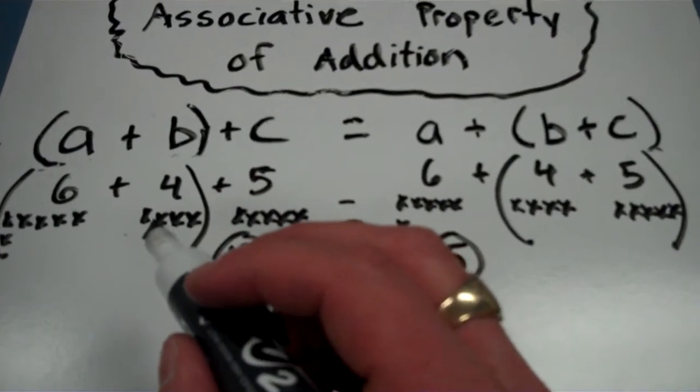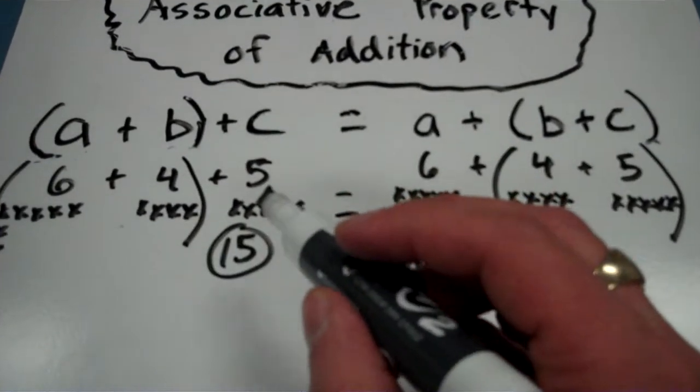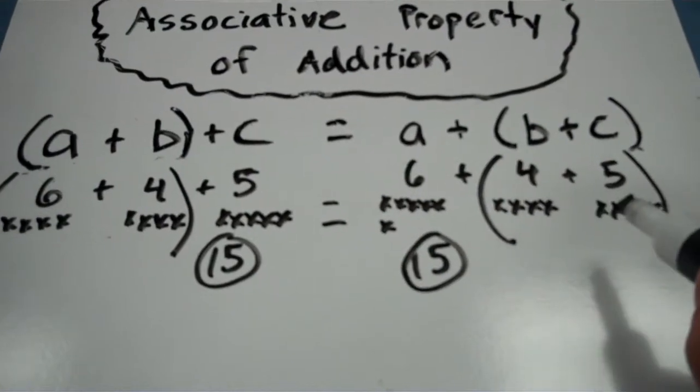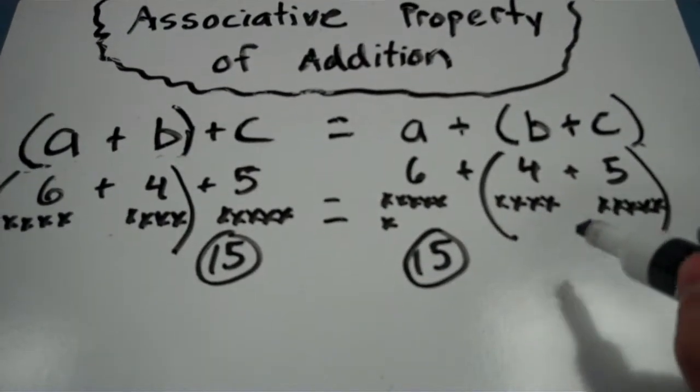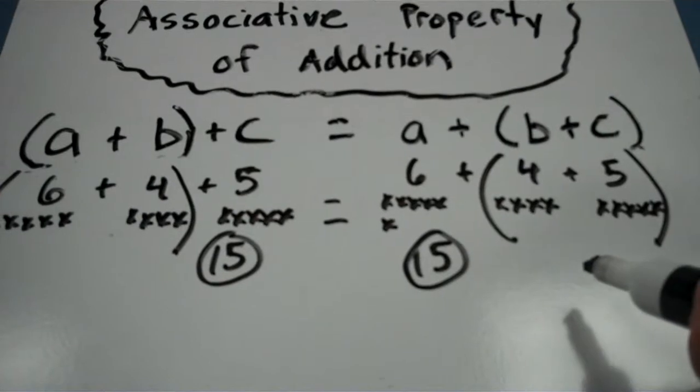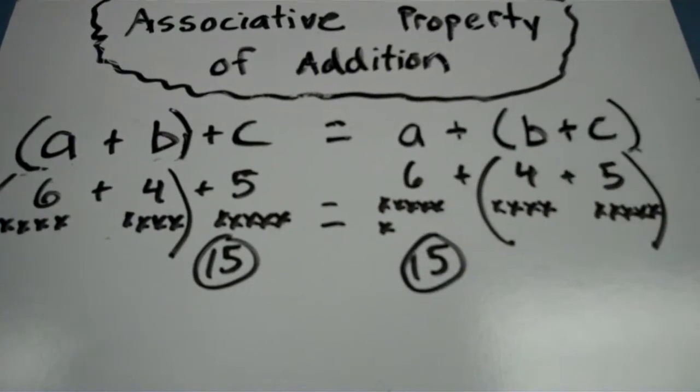4 plus 5 is 9. In fact, once you get that 10, then it's easy to add on. As opposed to this, 4 plus 5 makes 9, and it may be a little harder to add up to 9. So again, the associative property can be very powerful.